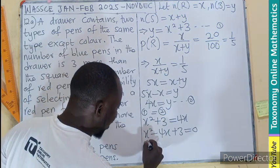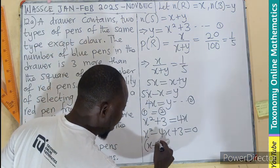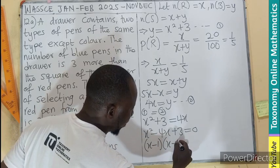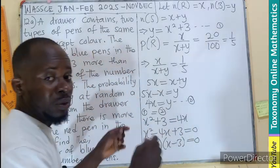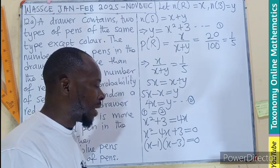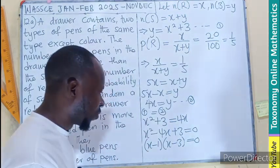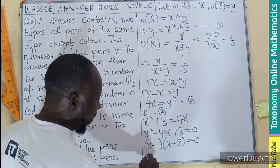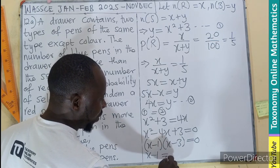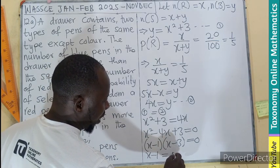So our value will just be X minus 1, X minus 3 equals to 0. These are the two factors that we have. Remember how we get a shortcut from our previous episodes.